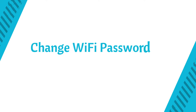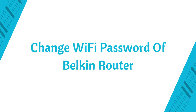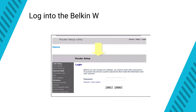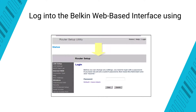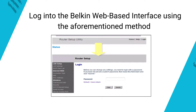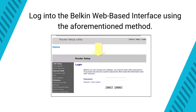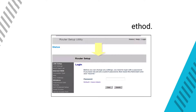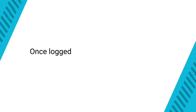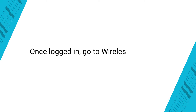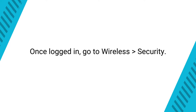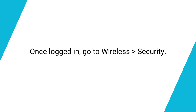To change the Wi-Fi password of your Belkin router, log in to the Belkin web-based interface using the aforementioned method. Once logged in, go to Wireless > Security.